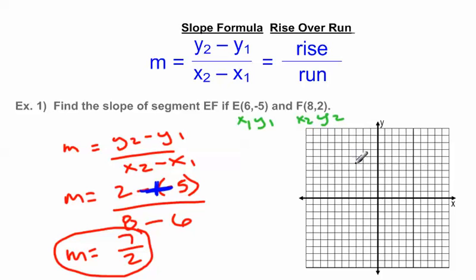Just to verify that these two will get you the same answer. We have E is at 6, negative 5. So 1, 2, 3, 4, 5, 6 down 1, 2, 3, 4, 5. And so this is the location of point E. F is at 8, 2. So that's 1, 2, 3, 4, 5, 6, 7, 8 up 1, 2. And that is point F.